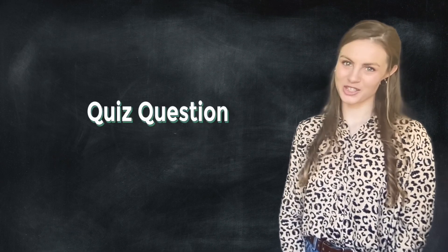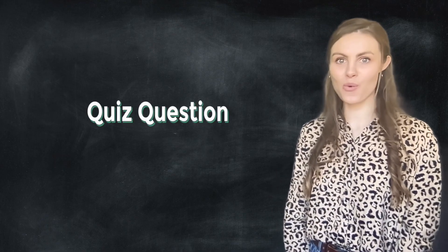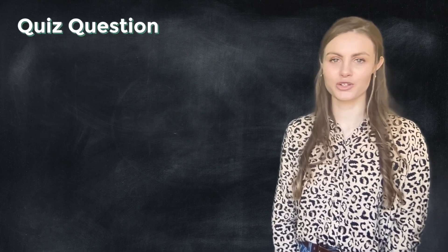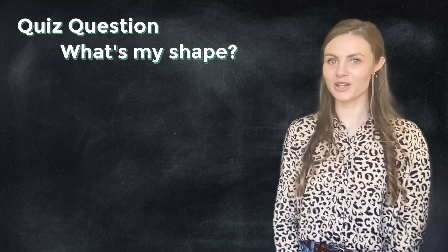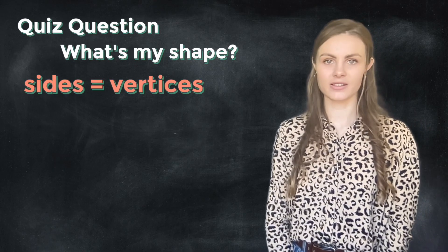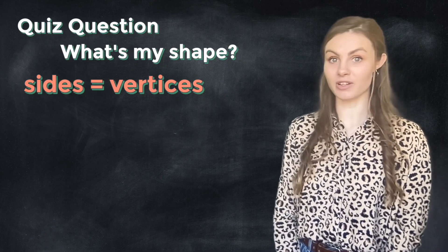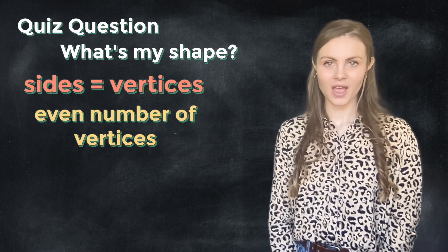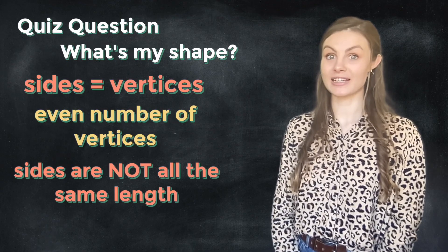And it is quiz question time. Now this quiz question is particularly challenging, so you're going to need to use all of your shape knowledge to help you. I'm going to be thinking of a shape and you've got to try and guess what the shape is. I will give you some clues though. First clue: My shape has the same amount of sides as it does vertices. Second clue: My shape has an even number of vertices. Third clue: My shape's sides are not all the same length. Pause the video if you think you need a little bit more time.